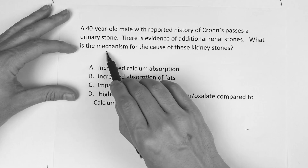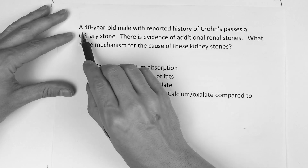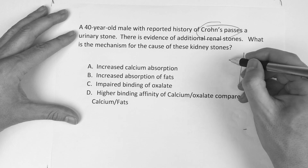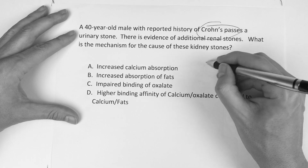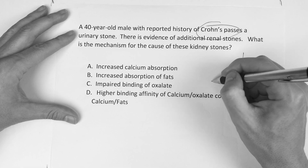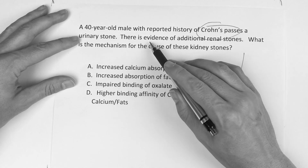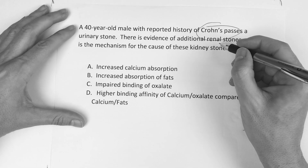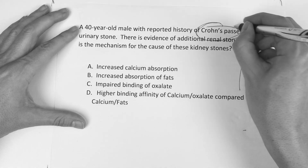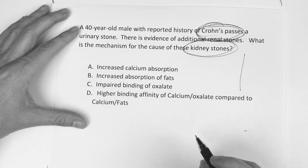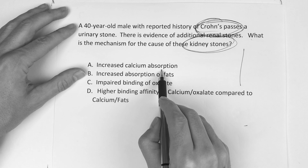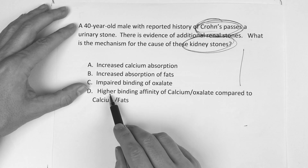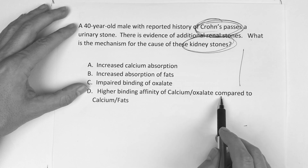Now this second question: a 40-year-old male with a reported history of Crohn's disease. There is evidence of additional renal stones. What is the mechanism for the cause of these kidney stones? The answer choices are: A) increased calcium absorption, B) increased absorption of fats, C) impaired binding of oxalate, or D) higher binding affinity of calcium oxalate compared to calcium fats.